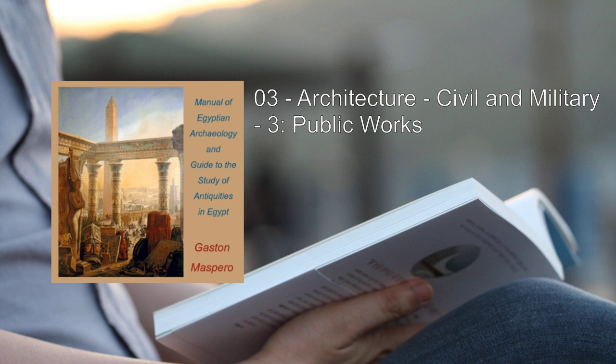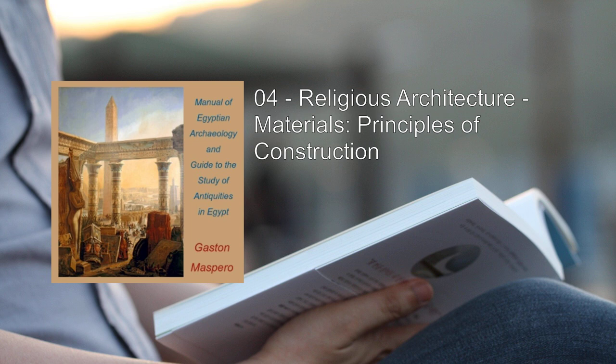End of chapter one, section three. Recording by Timothy Ferguson, Gold Coast, Australia. Chapter two, section one, of Manual of Egyptian Archaeology and Guide to the Study of Antiquities in Egypt by Gaston Maspero, translated by Amelia B. Edwards. This LibriVox recording is in the public domain. Recording by Timothy Ferguson. Chapter two: Religious Architecture. Section one: Materials, Principles of Construction.